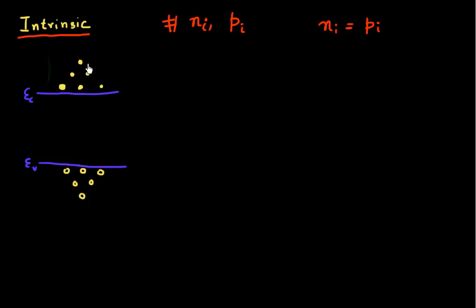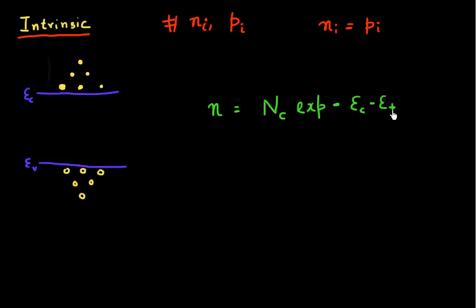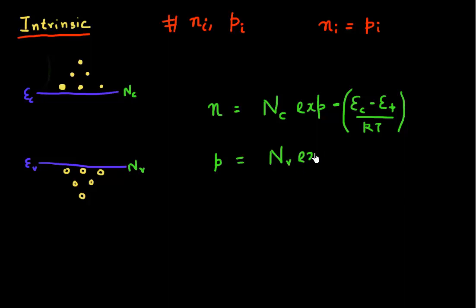We can use some of the equations derived in the previous videos. The number of electrons is given by a formula related to the effective density of states in the conduction band, Nc, and it has an exponential dependence on how far my Fermi level is from my conduction band. Similarly, the number of holes is given by a similar formula, where it's related to the effective density of states in the valence band, Nv, and it has an exponential dependence on how far my Fermi level is from my valence band.